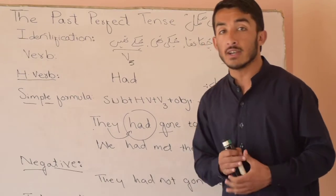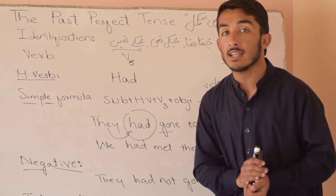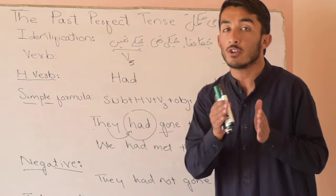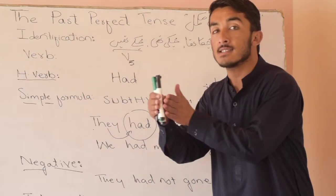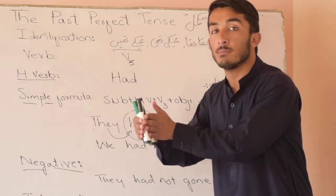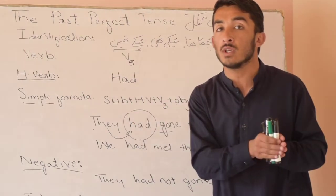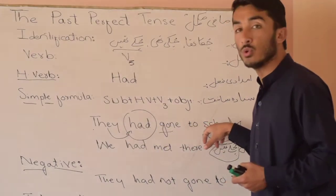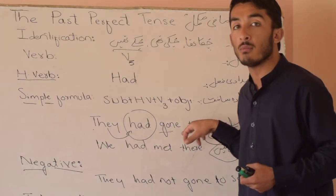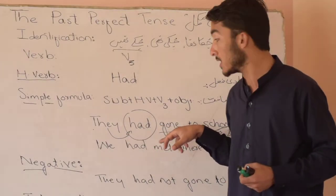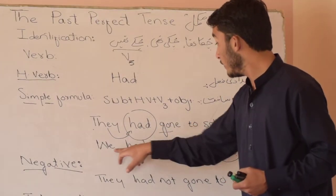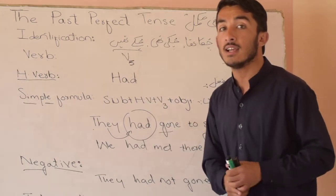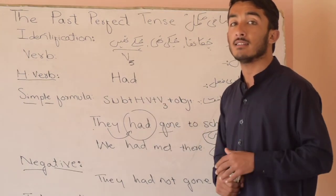Next are interrogative sentences — sawalia jumle. Interrogative sentences begin with the helping verb and end with a question mark. Had they gone to school? Kya woh waha mil chuke? Had we met there? Kya hum waha mil chuke the?